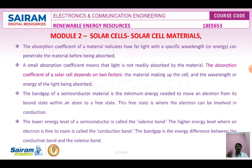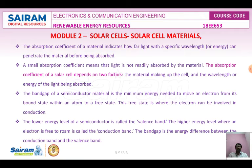A small absorption coefficient means that light is not readily absorbed by the material, even though some amount of energy is absorbed. The absorption coefficient of the solar cell depends upon two factors: one is the material making up the cell, and the other is the wavelength or energy of light being absorbed by the device.